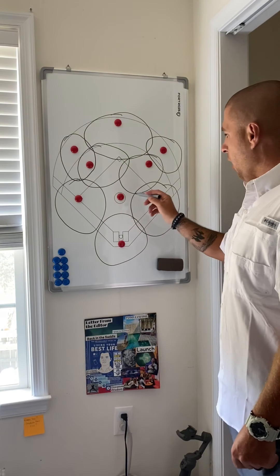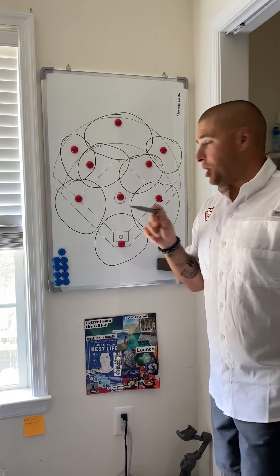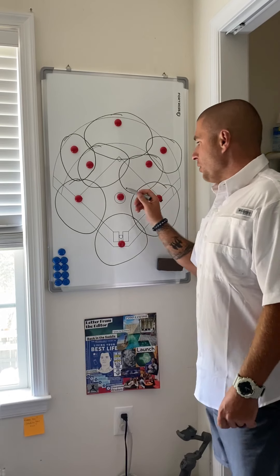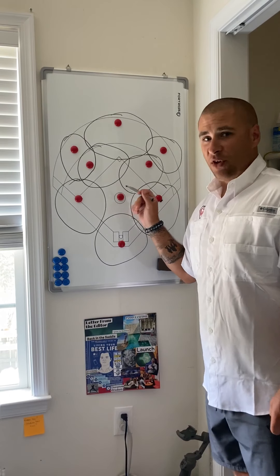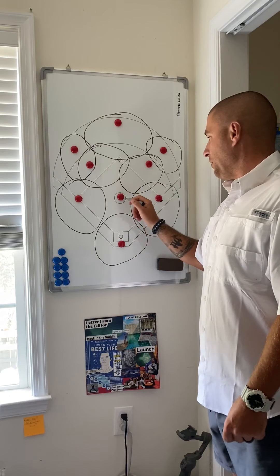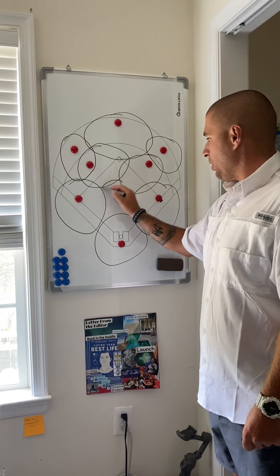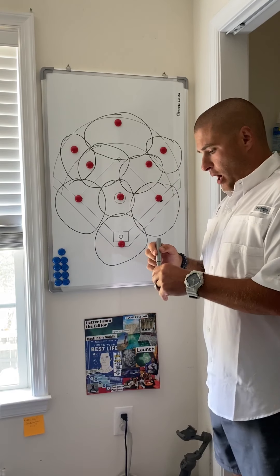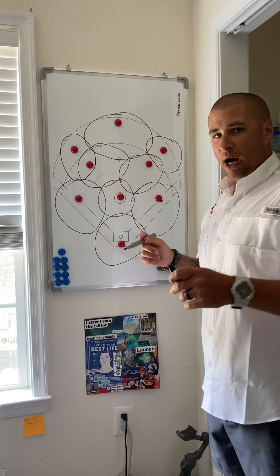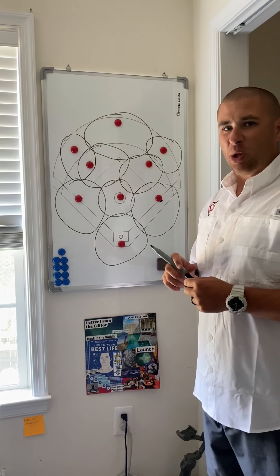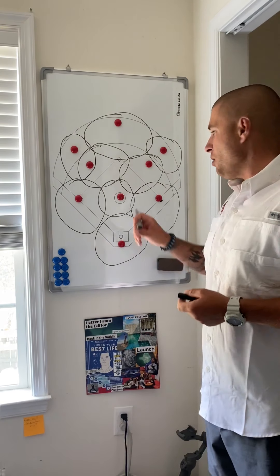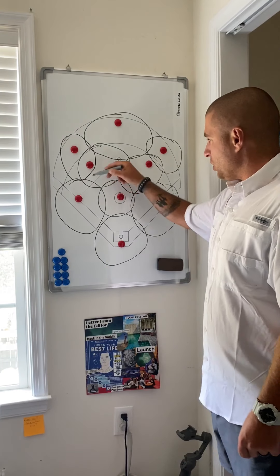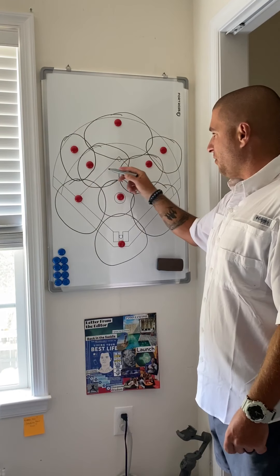Now, tricky one. For younger players, I would say continue to have the pitcher field his position, and this would be the pitcher's zone right here in the center. For older guys, where you want to get the pitcher out of there, your zones would just be coming in a little bit further.